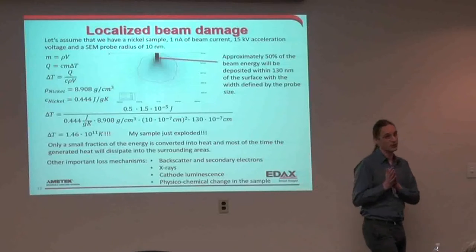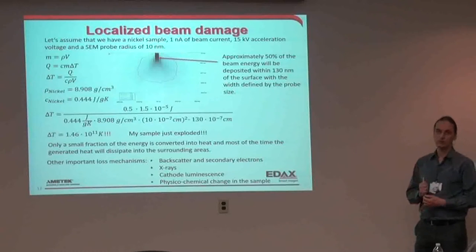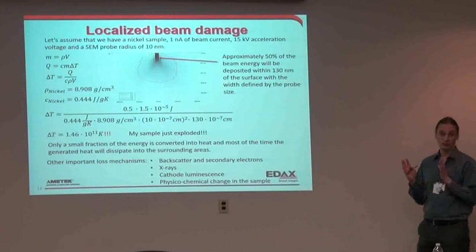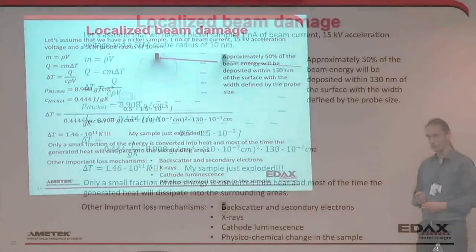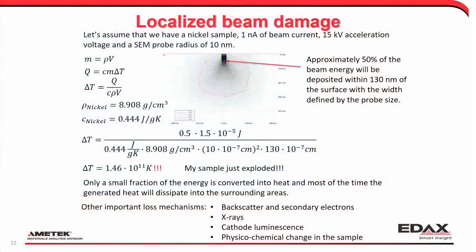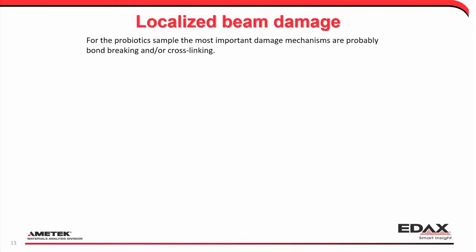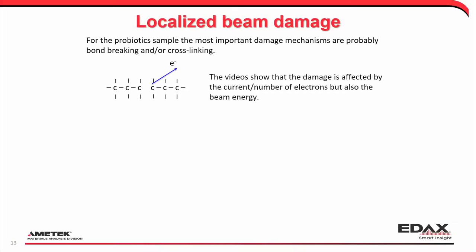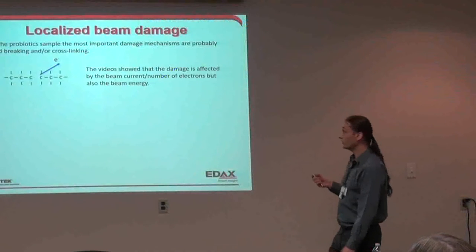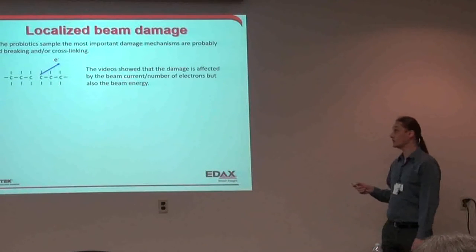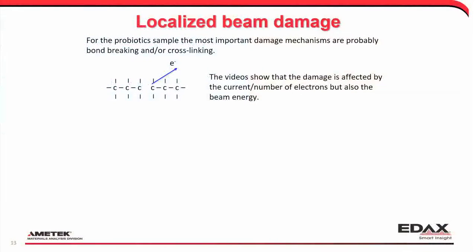That's not saying your sample doesn't heat up, but most of the time that's not what's going on. Some of the energy goes into physical-chemical changes in the sample — that's probably what's happening with these probiotics. Bond breaking and/or cross-linking of the material. If we have a polymer chain and an electron comes in, there is a chance it will simply break the bond in the chain — bond breaking or scissoring. The other option is cross-linking, where it forms new bonds. The videos showed that beam damage is affected by beam current (number of electrons) but also beam energy — if more electrons create more damage, then ten electrons probably create ten times the damage.